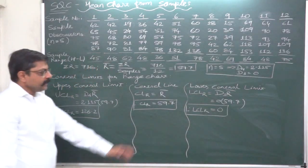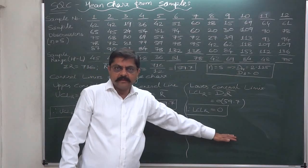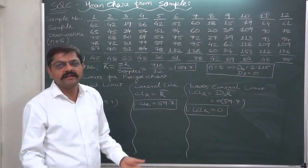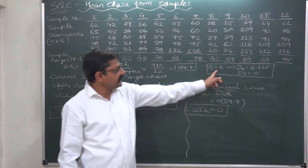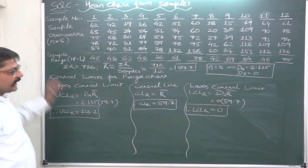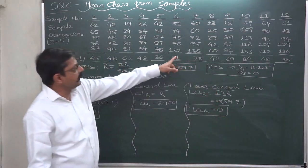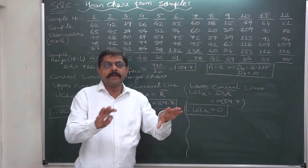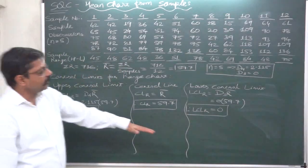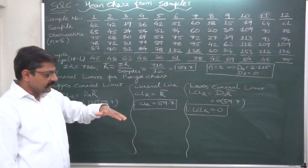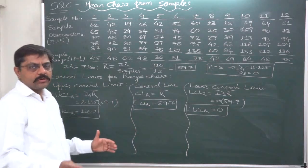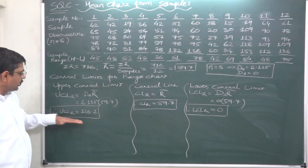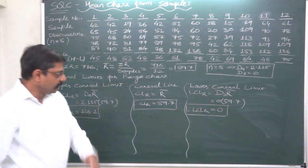Most of the time in case of range charts, the lower control limit comes to 0 because the sample size is usually 5. The safest thing is that range can never be negative. So when the lower control limit is 0, no sample point can be below it. In this kind of range chart, the conclusion that the process is not under control can be arrived at only if any one or more sample ranges are greater than the upper control limit.